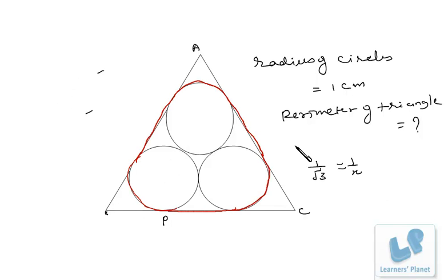Now we see a small variation in this problem. Here I have to find out the length of this red line. These three circles are enclosed in this and we have to find out the perimeter of this figure.